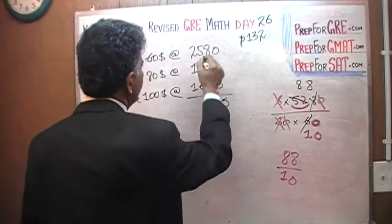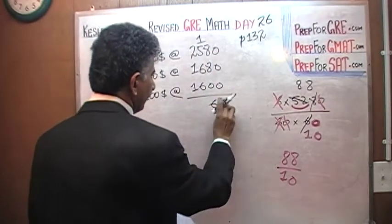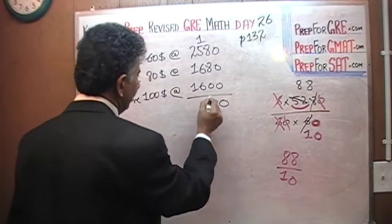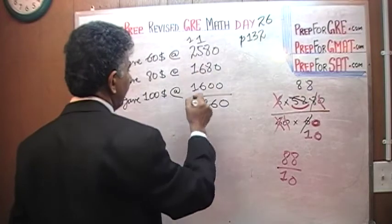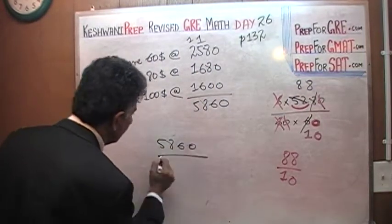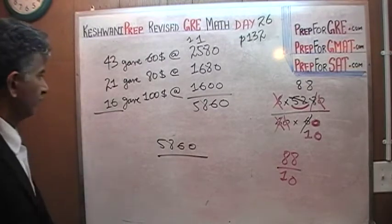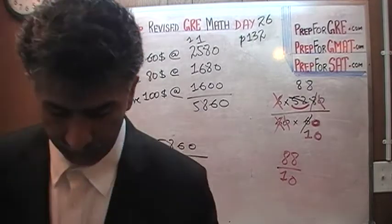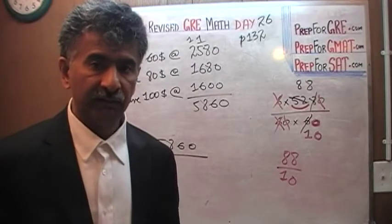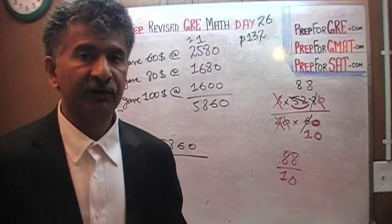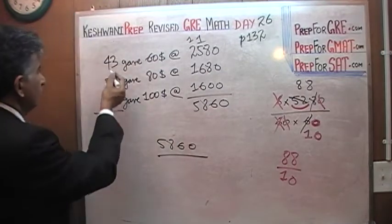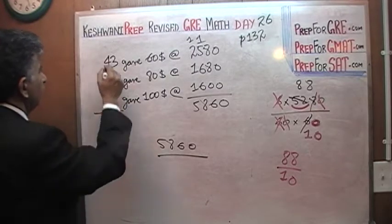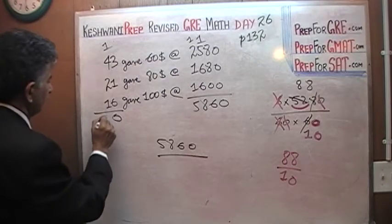That's 0, 8 plus 8 is 16 carry 1. There are three 6's, that's 18, carry 1. 2 plus 1 is 3, 4, 5, so we get 5,860. Let's find out how many people. 3 plus 1 is 4, 4 plus 6 is 10, that's 0 carry 1, so there are apparently 80 people.